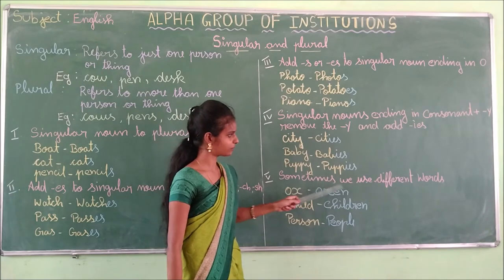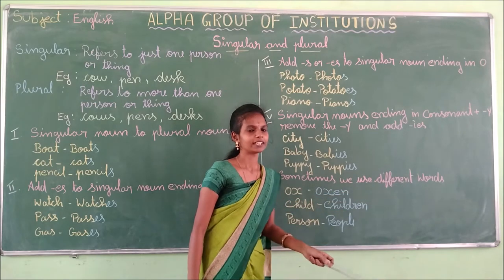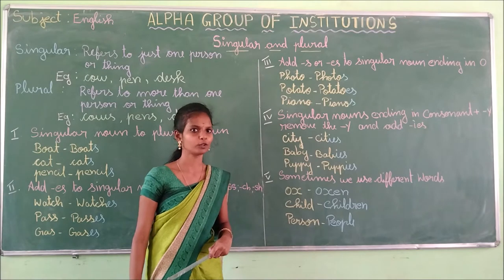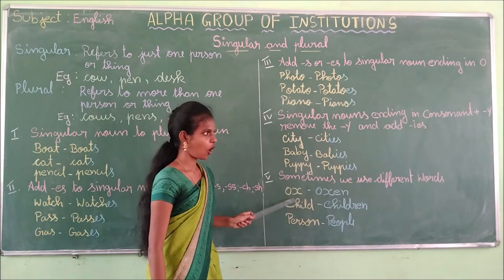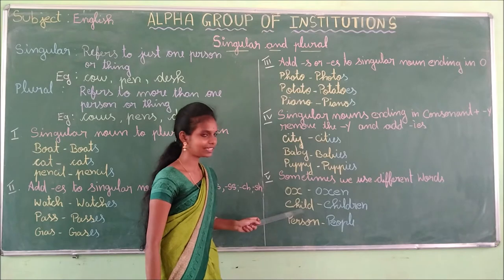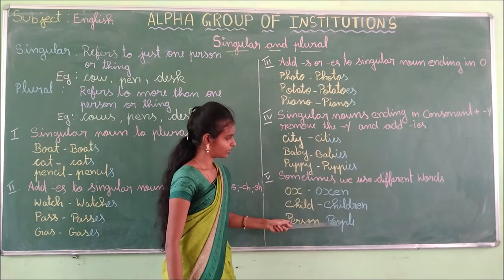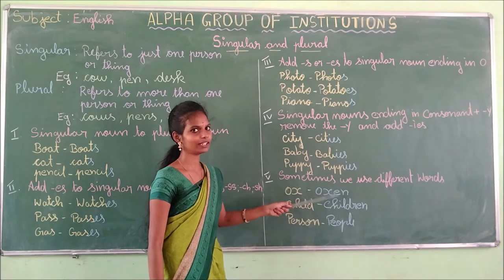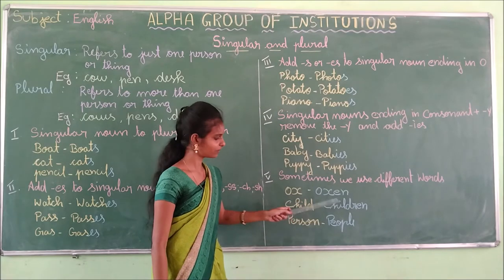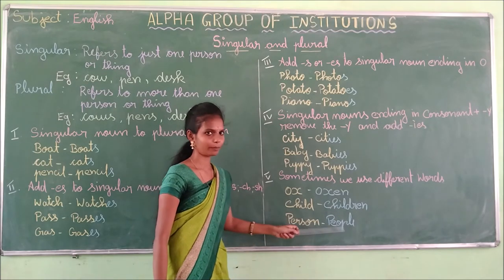Sometimes we use completely different words to form the plural. For example: ox→oxen, child→children, person→people. These are irregular plural forms.